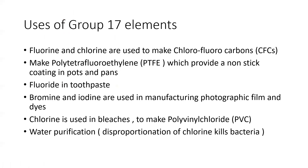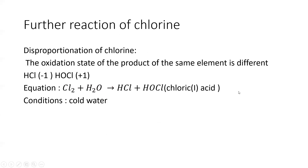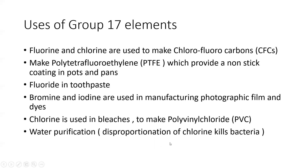Uses of Group 17 elements: fluorine and chlorine are used to make chlorofluorocarbons (CFCs), which is part of organic chemistry. Fluorine is used to make polytetrafluoroethylene (PTFE), providing a non-stick coating in pots and pans. Fluoride is also used in toothpaste. Bromine and iodine are used in manufacturing photographic film and dyes. Chlorine is used in bleaches and to make PVC. Chlorine is also used in water purification — its disproportionation when added to water kills bacteria, making water safe to drink.